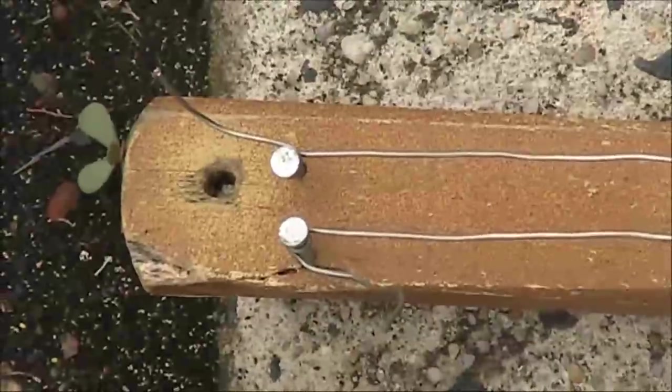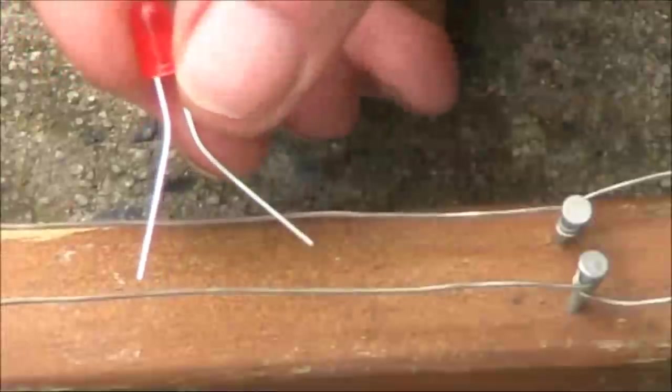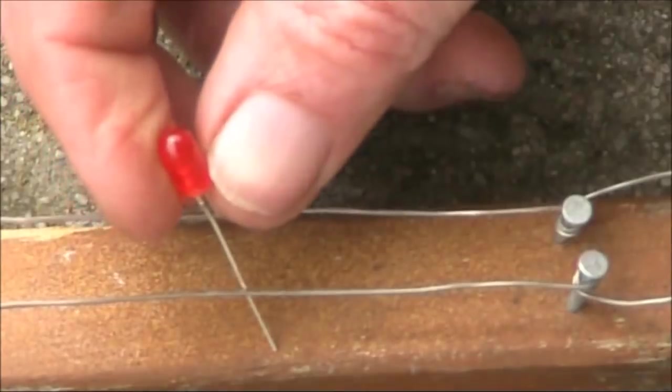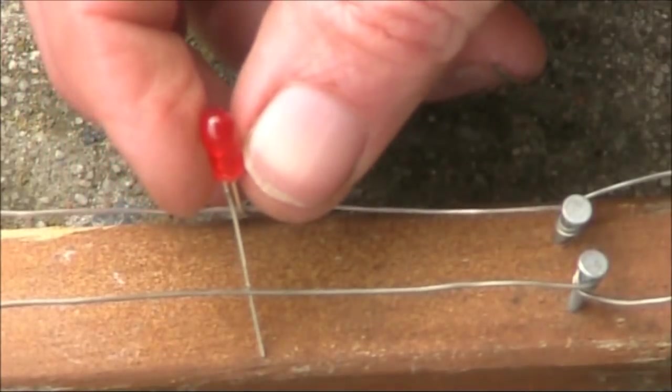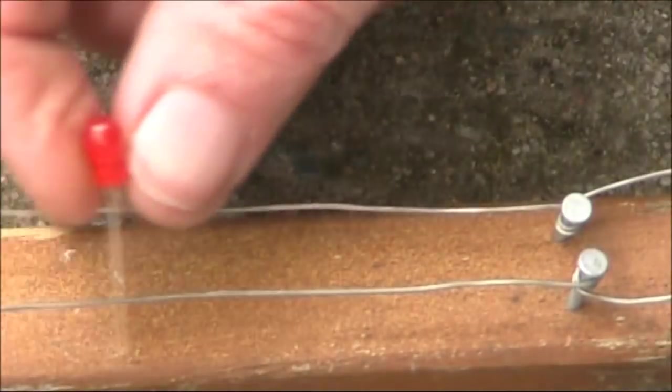At the far end, the wires are tied off to nails to keep them taut. Gently bend the LED's leads so they make contact with the Lecher line wires. You need to be able to slide it along, because there will be peaks and troughs in brightness.